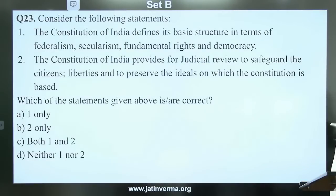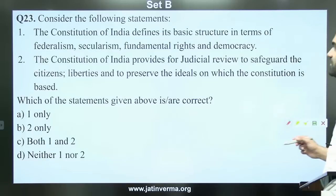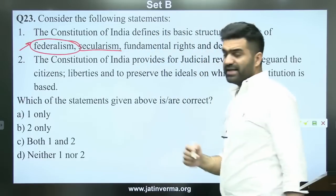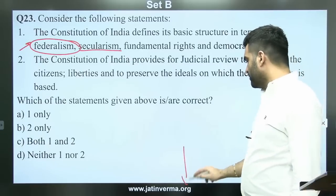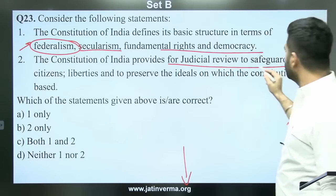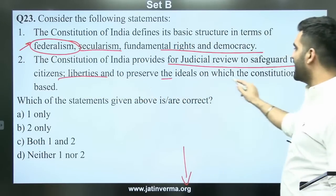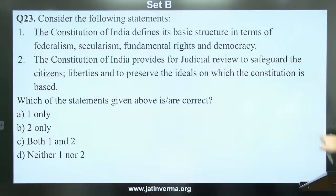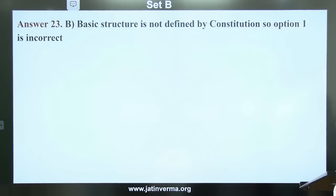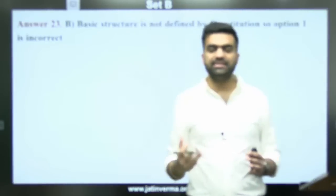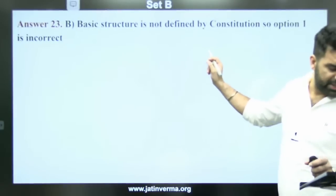Question 23: The Constitution of India defines its basic structure in terms of federalism, fundamental rights, and democracy. Constitution of India provides for judicial review to safeguard citizens' liberties and to preserve the ideals on which the Constitution is based — the second statement is correct. The answer is B — 2 only. The basic structure is not defined in the Constitution; it has been inferred and created by the judiciary.